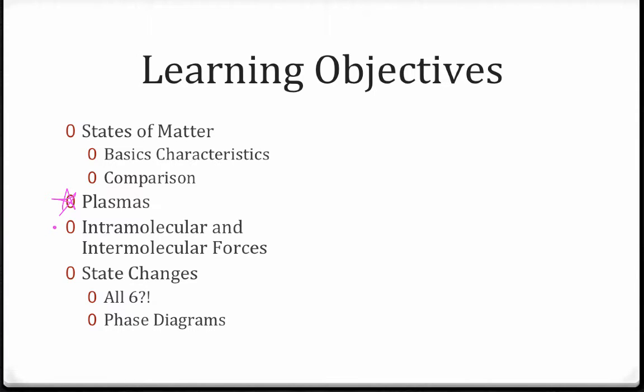We'll start a brief introduction into the idea of intra- and intermolecular forces and what those terms mean, which we'll talk a lot more about later on in the chapter. And last but not least, we'll talk about state changes. Turns out, there are six ways to change between our three states of matter. Most people are familiar with two of them. We'll talk about all six. And then last but not least, we can plot those changes in something called a phase diagram.